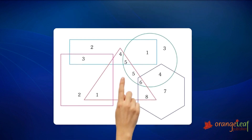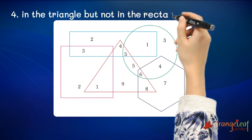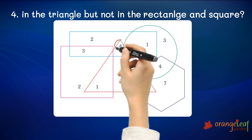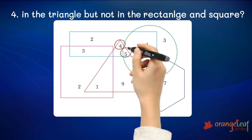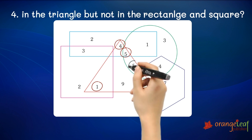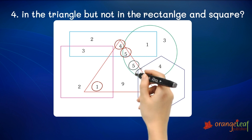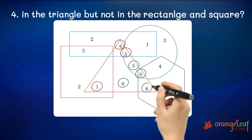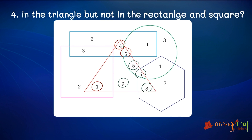Can you tell me the sum of the numbers present in the triangle but not in the rectangle and square? There are seven numbers in the triangle but there are three numbers in both the rectangle and the square. That leaves us with four numbers: five, six, eight and nine. Five plus six is eleven. Eleven plus nine is twenty. Twenty plus eight is twenty-eight. The answer is twenty-eight.